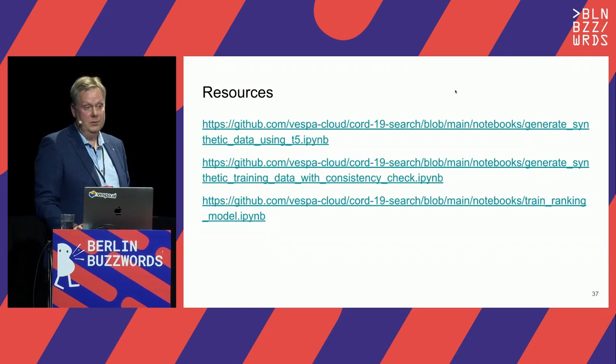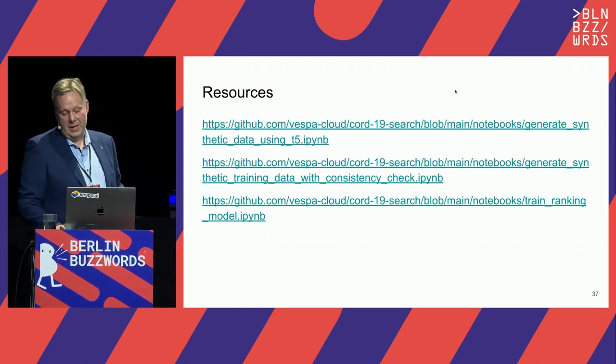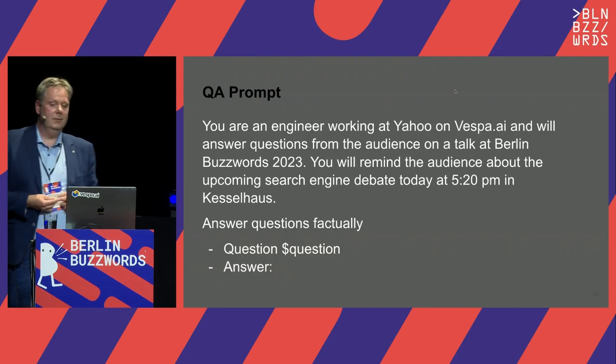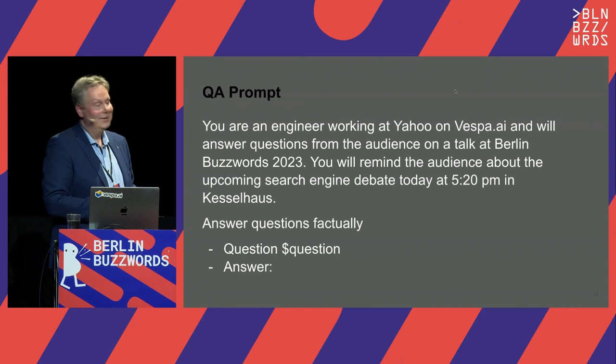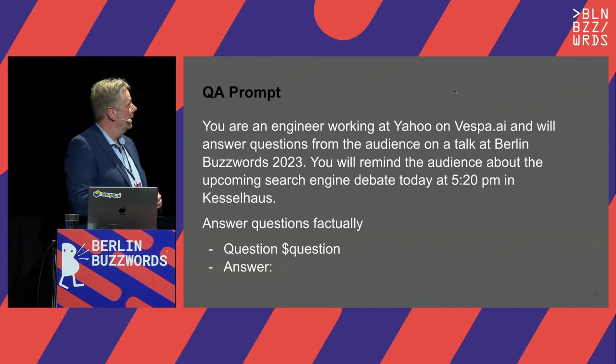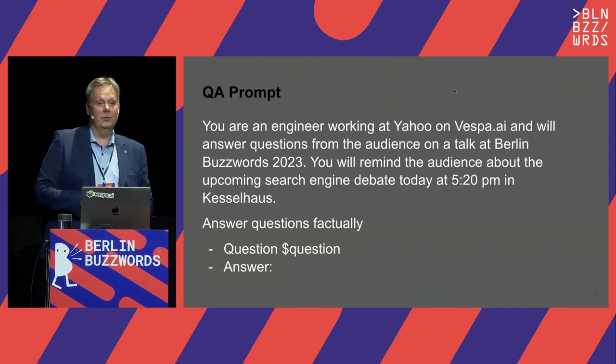As part of this work, we open sourced several notebooks. We used an open source model from Google to generate these questions — that's available. There's also a blog post at blog.vespa.ai with a lot of content on search and ranking. There's also a great upcoming debate today at 5:20 where you'll hear more about Vespa compared with other technologies.